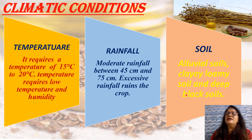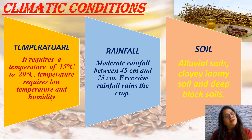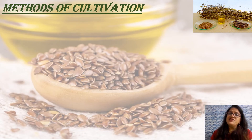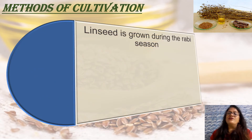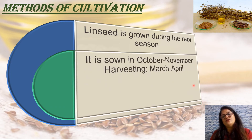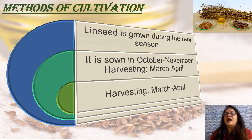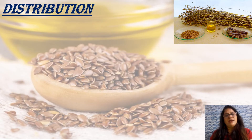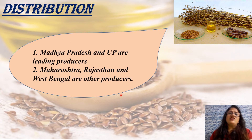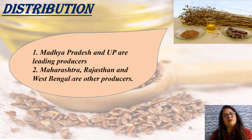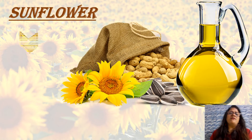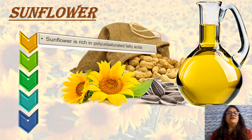Soil: alluvium soil, clay loamy soil, and deep black soil are preferred for linseed. Methods of cultivation: linseed is grown during the Rabi season, sown in October to November, and harvested in March to April. Distribution: Madhya Pradesh and Uttar Pradesh are the leading producers, while Maharashtra, Rajasthan, and West Bengal are other producers of linseed.